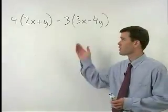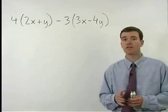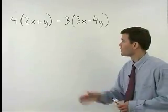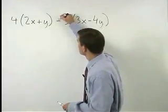To simplify the problem you see here, we're going to use both the distributive property and combining like terms. But before we do anything, we need to change these minus signs to plus negatives.